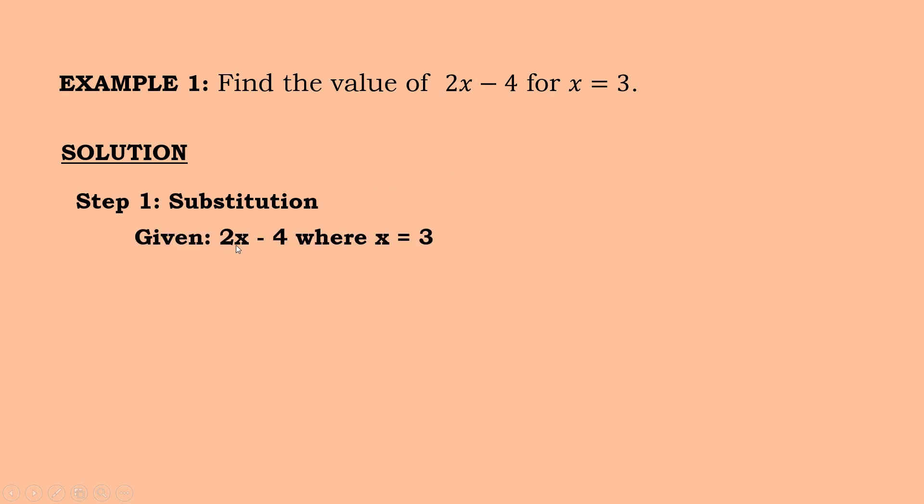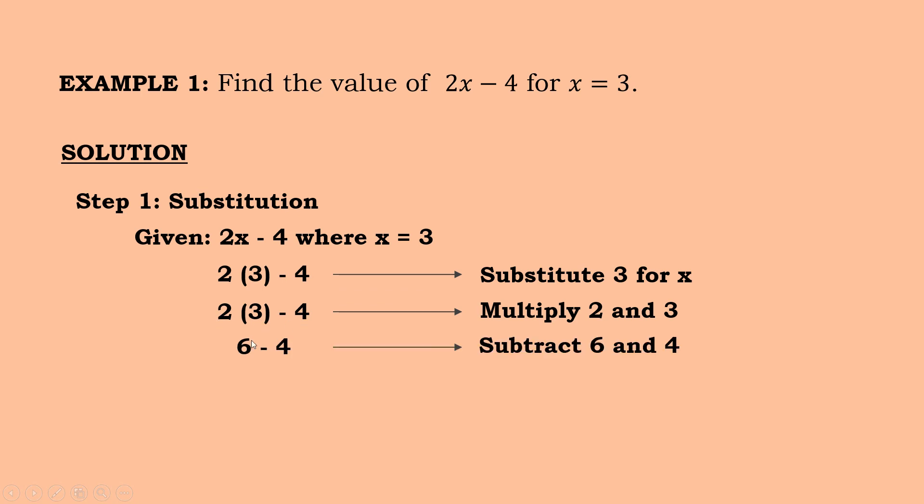So given, we have here 2x minus 4, where x is equal to 3. So you just have to substitute the value of your x. So since the value of your x is 3, meaning substitute 3 for x. So we place 3 here instead of x because we substitute 3 for x. So now we have 2 times 3 minus 4. Next, we have to multiply 2 and 3. So 2 times 3 is equal to 6 minus 4. So we have to subtract 6 and 4. So the answer is 2. 6 minus 4 is 2.